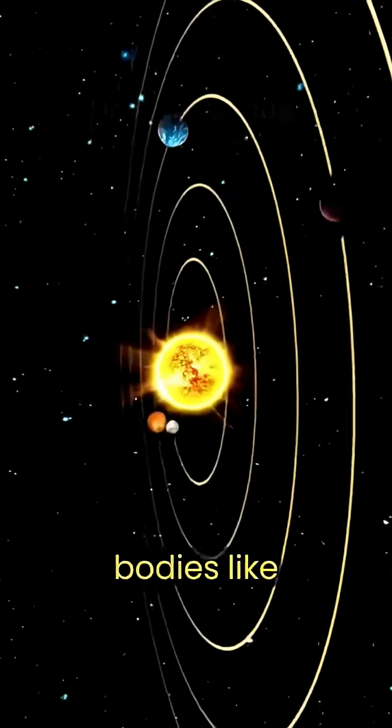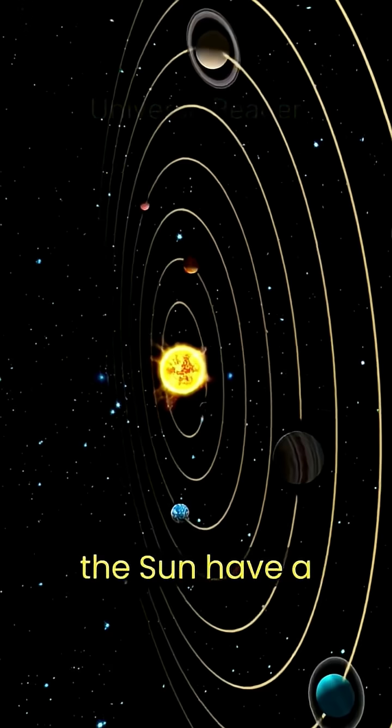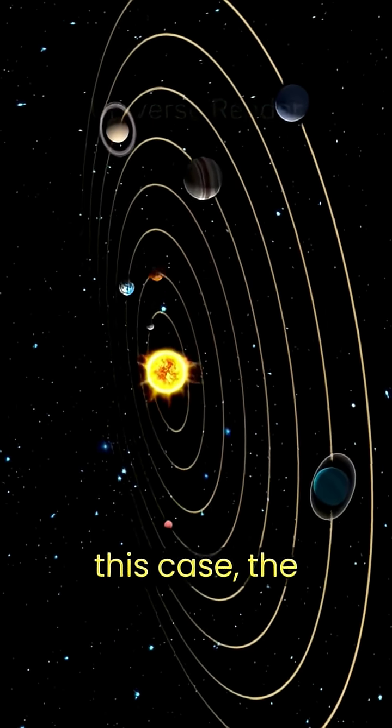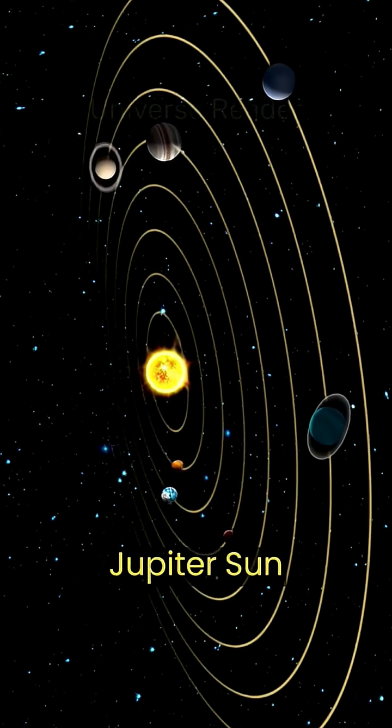When two massive bodies like Jupiter and the Sun have a common center of mass, they both orbit around it. In this case, the center of mass for the Jupiter-Sun system is located just outside the Sun's surface.